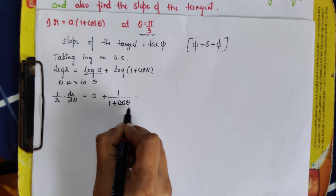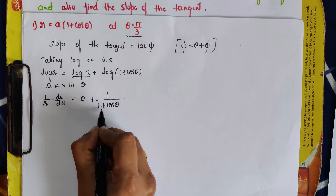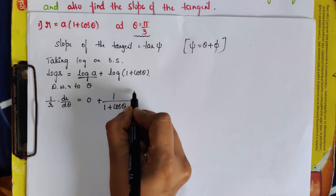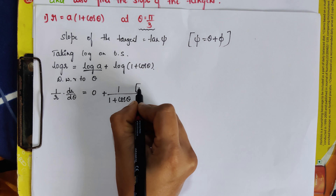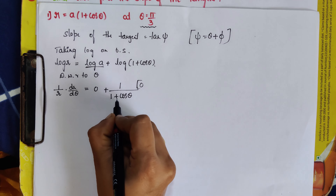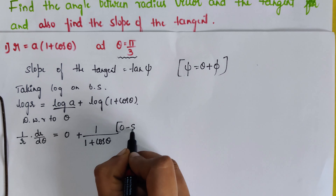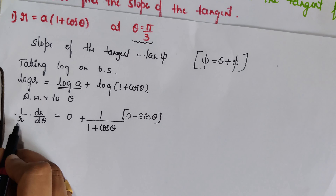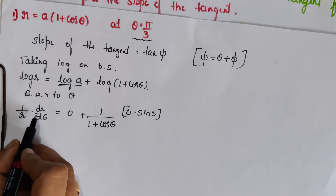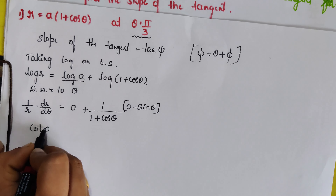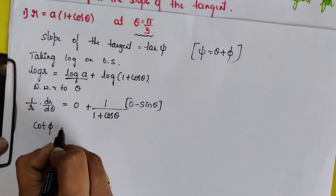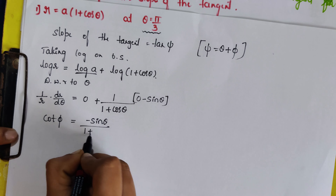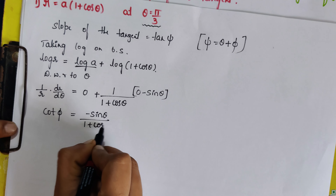In the denominator we have 1 + cosθ, which we differentiate with respect to θ. The differentiation of 1 is 0, and the differentiation of cosθ is −sinθ. So (1/r)(dr/dθ) can be written as cot φ equals −sinθ/(1 + cosθ).